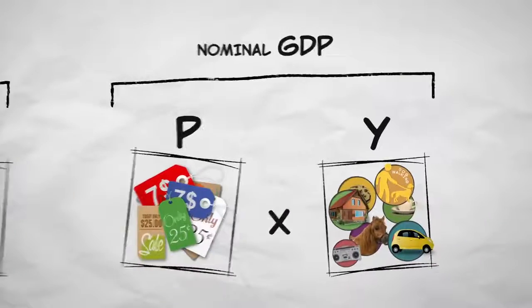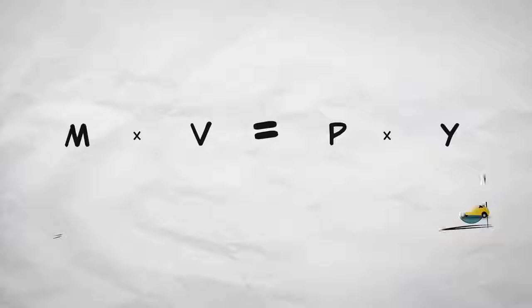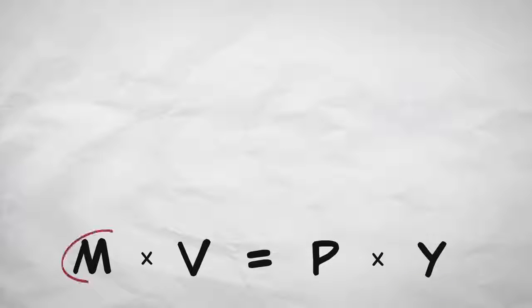Both sides represent nominal GDP in a different way. So, these are equal by definition, which is why we call this equation an identity.